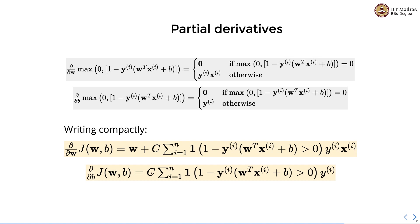The same condition applies when computing the partial derivative with respect to b. It is 0 for correctly classified points, otherwise it is -yi. The partial derivative of the loss with respect to b is C times the sum over all training examples of -yi, subject to the condition 1 - yi(w^T xi + b) > 0. When this condition is false, the partial derivative for that point is 0.